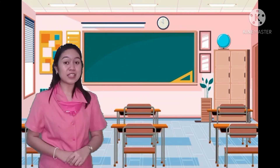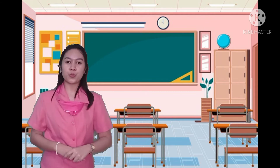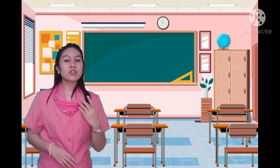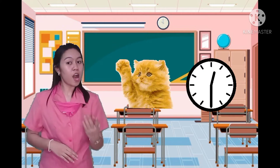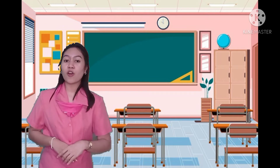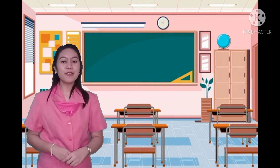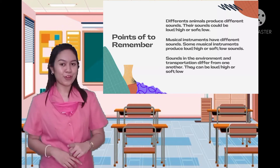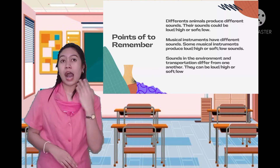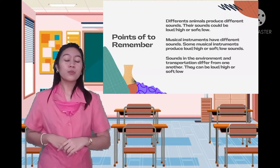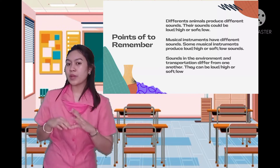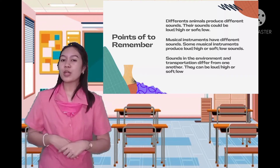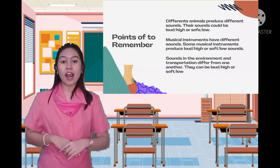After learning how to classify sounds by their sources, now we will learn another way to classify them. We can also classify sounds as loud or high, or soft or low. Some examples of soft or low sounds are a cat and a clock, while examples of loud or high sounds are the sound of a dog and an ambulance. Different animals, musical instruments, environmental sounds, and transportation sounds can all be either loud or high, or soft and low.